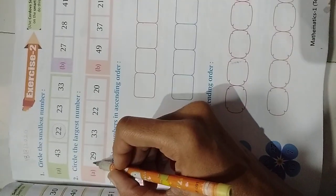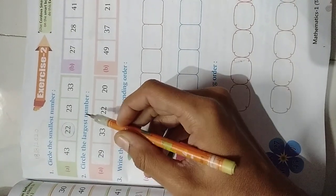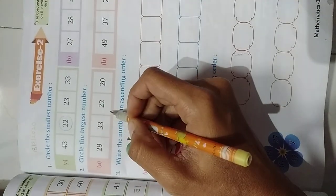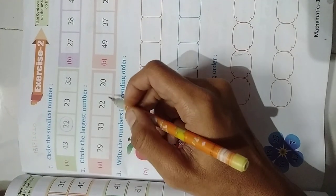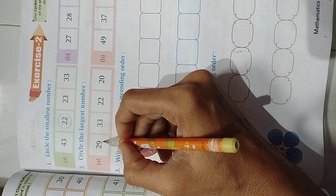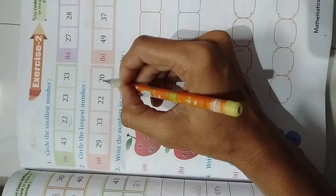Now I am going to explain second one. Circle the largest number. Here we need to find largest number. Means 10s and 1s both places are big numbers. Right. Now here first number is 29, 33, 22, 20.